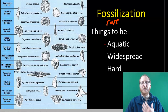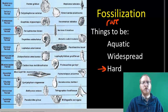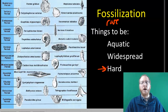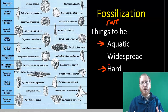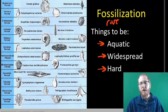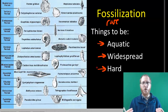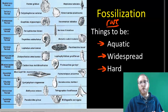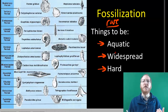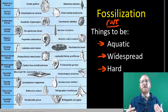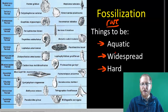To fossilize as best as possible, it helps to be hard — shells are some of the best things to fossilize, though bones, teeth, and exoskeletons work too. Being aquatic helps because it's easier to get covered by sediment in water. Being widespread also helps: like buying more lottery tickets, having more organisms dying means more chances for that rare fossilization to happen. Widespread territory also means organisms are more likely to end up in the right place — near a swamp or tar pit — to fossilize.